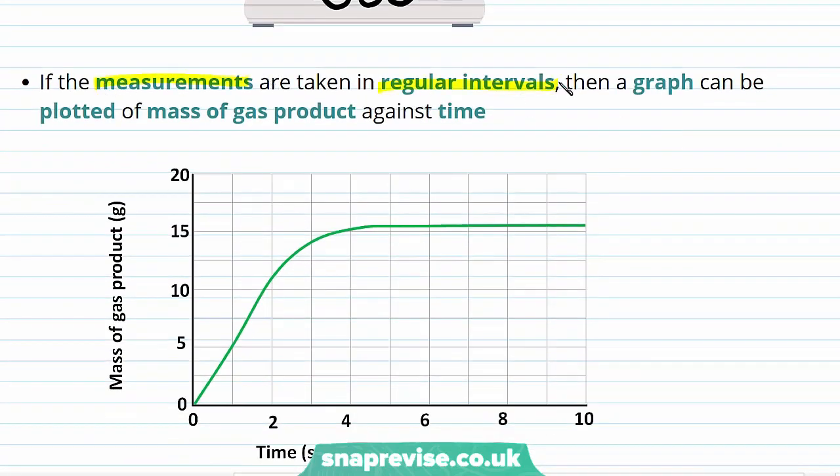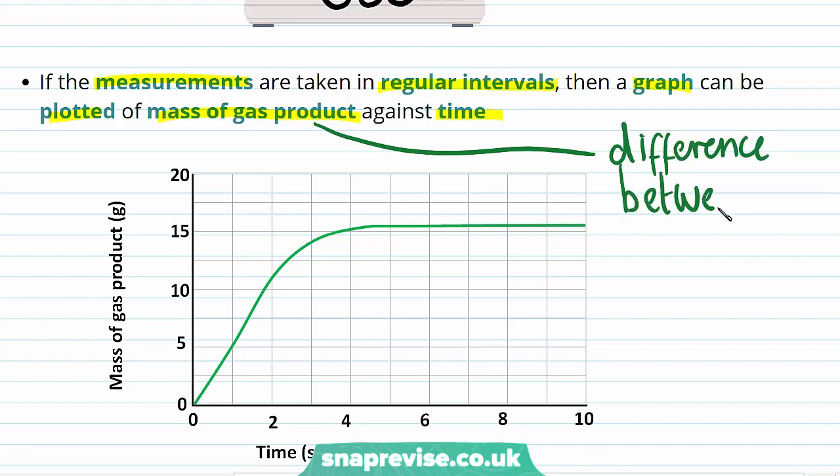Placing the reaction flask onto the mass balance allows measurements to be taken at regular time intervals. As a result, a graph can be plotted of the mass of the gas product against time, where the mass of the product that is a gas is just calculated by the difference between the initial reading and the reading at that time.